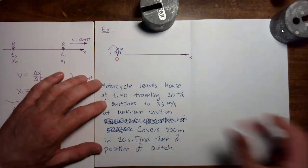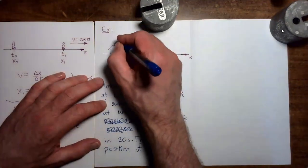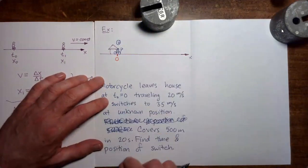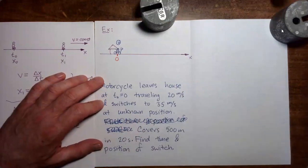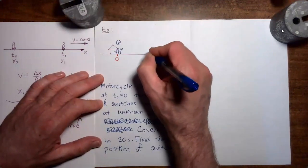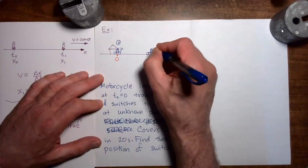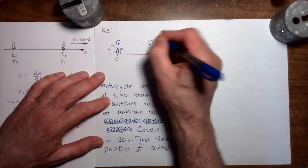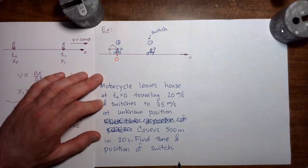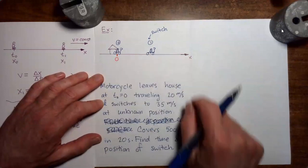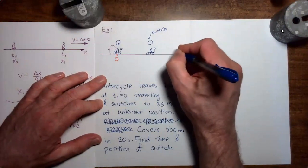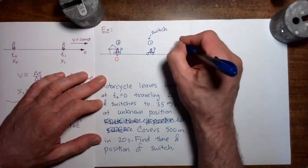The first moment of interest will be where the motorcycle leaves the house — we already drew that, and we'll call that moment zero. Then there's going to be a moment of interest out here somewhere, where there is the switch from 20 meters per second to 35 meters per second — this is moment one, the moment of the switch. Our last moment of interest is where the motorcycle completes the process having covered the full 500 meters — we'll call this moment two.